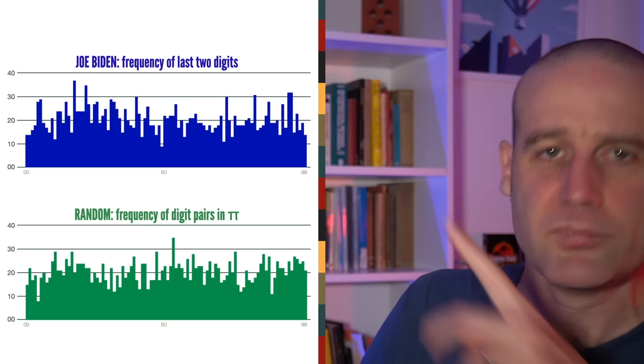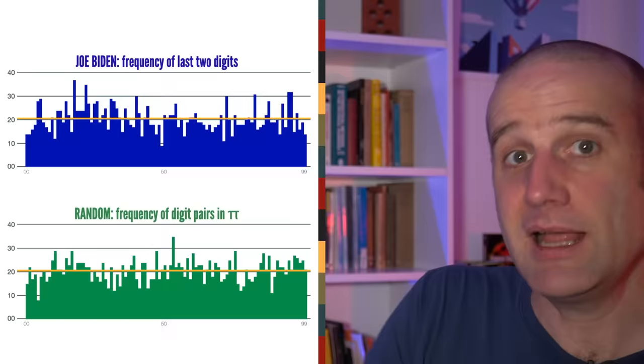It goes up, it goes down. Obviously they're not all exactly the average, which I've labeled with the yellow line there. But there's roughly as many up as down. Not surprising.